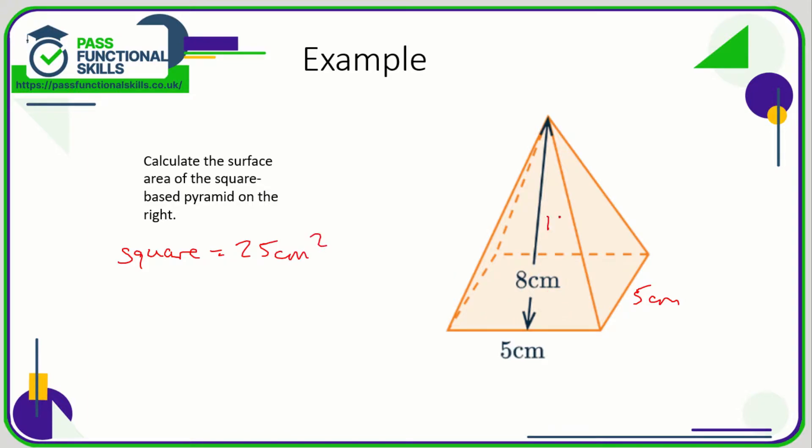Now in total we've got one, two, three, four triangles. The area of a triangle is base times the height divided by two. So let's work out the area of one triangle. It's going to be 5 multiplied by 8 divided by 2. 5 times 8 is 40, 40 divided by 2 is 20. So one triangle is going to be 20 square centimeters.